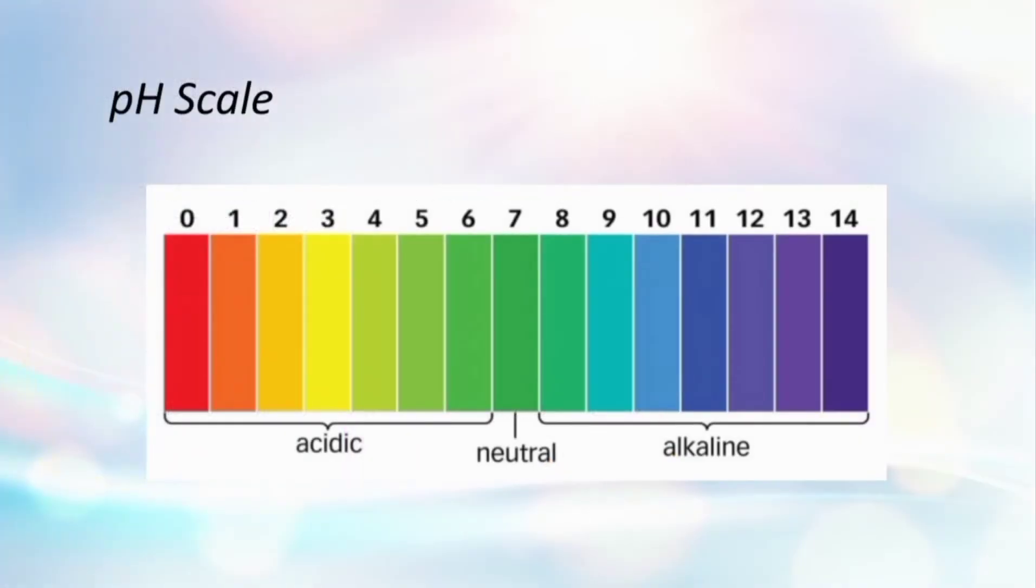This slide shows the pH scale. The pH of a neutral solution is 7. Values less than 7 on the pH scale represent an acidic solution. As the pH value increases from 7 to 14, it represents an increase in OH- ion concentration in a solution, i.e. increase in the strength of alkali.